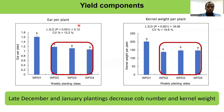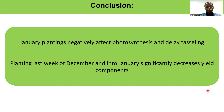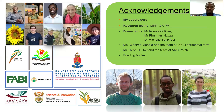We also saw a significant decline in the number of ears produced per plant, as well as kernel weight, from the second weekly planting up to the fourth weekly planting. Therefore, late December and January planting decreases ear number and kernel weight. In conclusion, January planting negatively affects photosynthesis and delays tasseling, and planting in the last week of December into January significantly decreases yield components. I would like to thank my supervisors, funding bodies, and everybody who contributed to this project. Thank you.